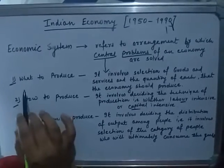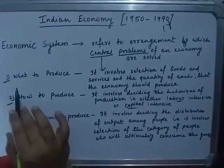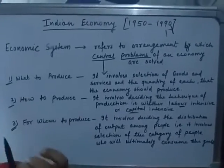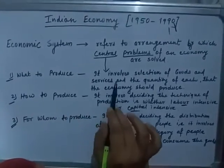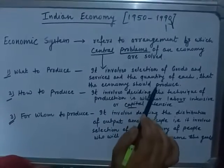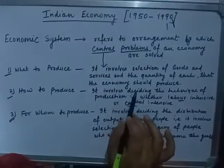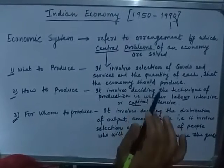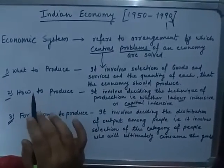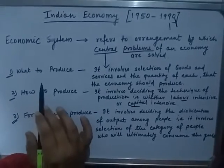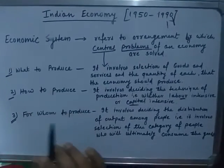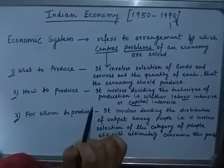The first problem is what to produce. It involves selection of goods and services and the quantity of each that the economy should produce. Every country has different kinds of necessities and requirements, and according to those necessities and requirements, the country produces goods and services.